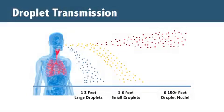Let's take a moment to review droplet transmission. Droplet transmission occurs when an infected person coughs, sneezes, talks, or laughs and generates droplets that contain the germ causing their infection. These droplets are either directly deposited on another person or onto a surface where the droplets are touched or contacted by another person.